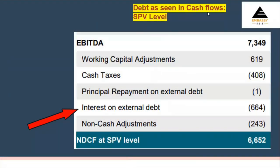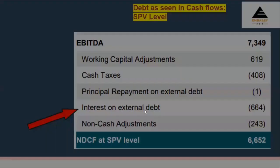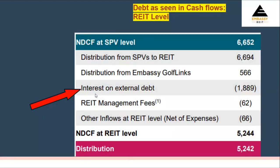The debt as seen in cash flows is at the SPV level — here is a snapshot from the Embassy REIT presentation. From the EBITDA, a cash flow is worked out. You can see here the interest on external debt — note that this refers to external debt only, not internal debt. From that SPV-level cash flow, a further deduction is made for external debt at the REIT level, arriving at the amount available to be distributed to unit holders at the REIT level.